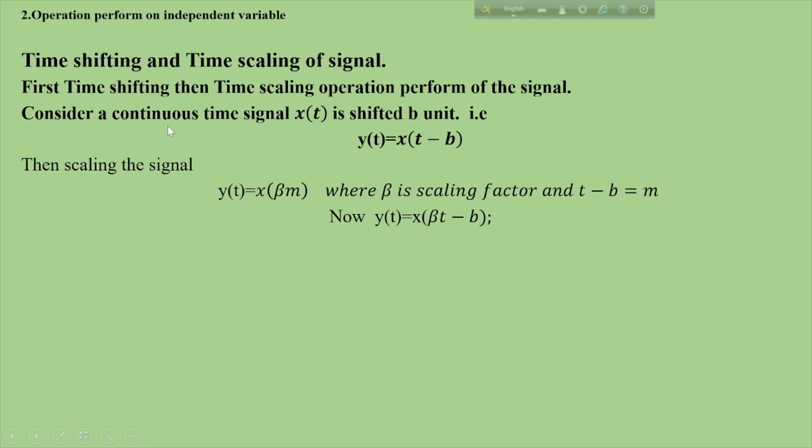Consider a continuous time signal x(t) that is shifted by b units, resulting in x(t - b).